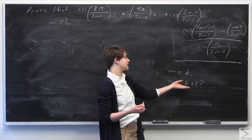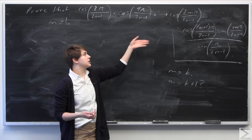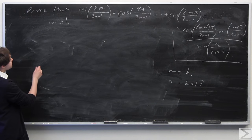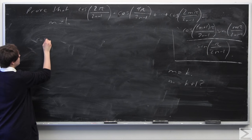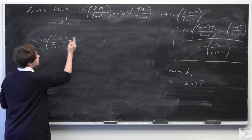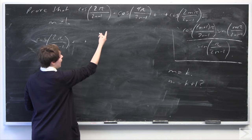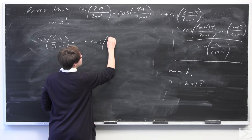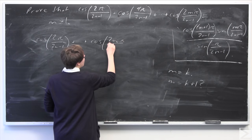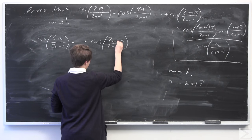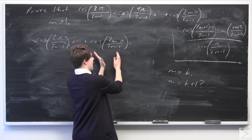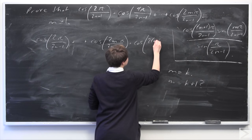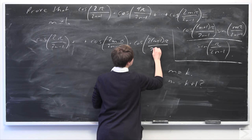Now I'm going to plug in k plus 1 for m and see if we get equality between the left-hand side and the right-hand side. On the left-hand side we're going to have cosine of 2 pi over 2n minus 1, plus dot dot dot — you can assume cosine of 4 pi over 2n minus 1 is also there — up through cosine of 2n pi over 2n minus 1, and then the n plus 1th term: cosine of 2 times n plus 1 times pi over 2n minus 1.